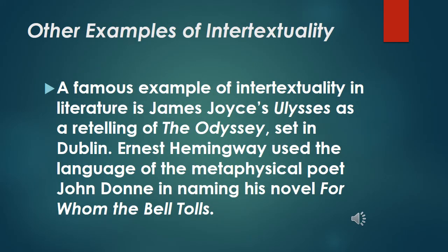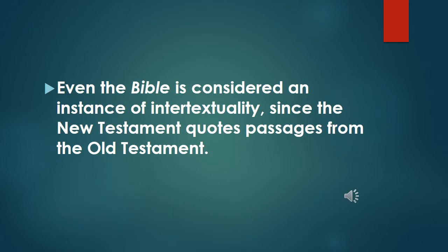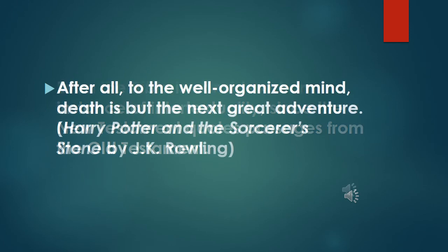To further understand intertextuality, a famous example in literature is James Joyce's Ulysses as a retelling of the Odyssey, set in Dublin. Ernest Hemingway used the language of the metaphysical poet John Donne in naming his novel For Whom the Bell Tolls. The Bible is also considered an instance of intertextuality, since the New Testament quotes passages from the Old Testament.